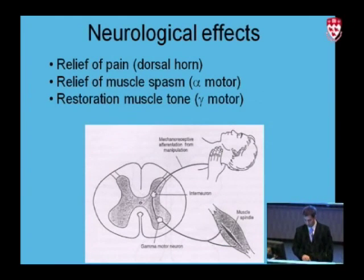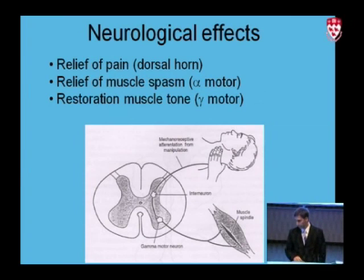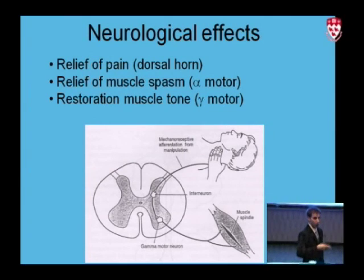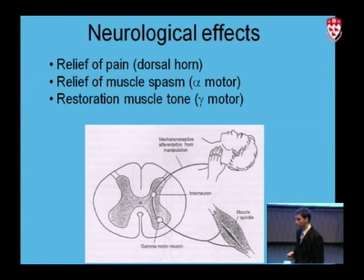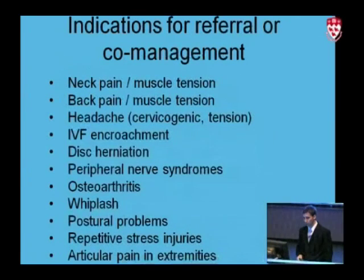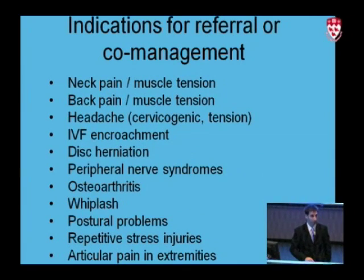The adjustment also has an effect on the gamma motor neuron in the anterior horn to restore normal muscle tone, or reset the gain in the muscle that's dysfunctional. So in effect, the neurological effects of the adjustment restore proper neurology to the area in question. A better understanding of the mechanical and neurological effects can lead us into a list of conditions that a chiropractor typically treats, or indications for referral.